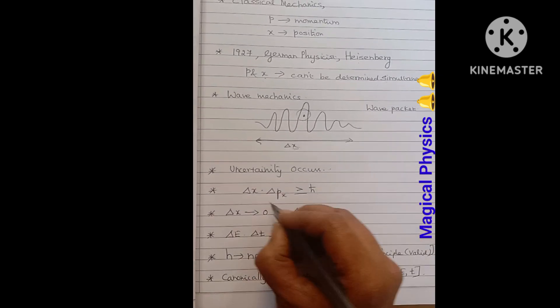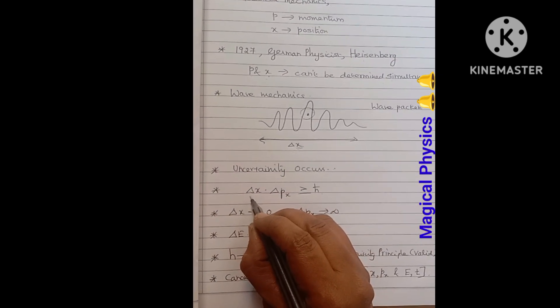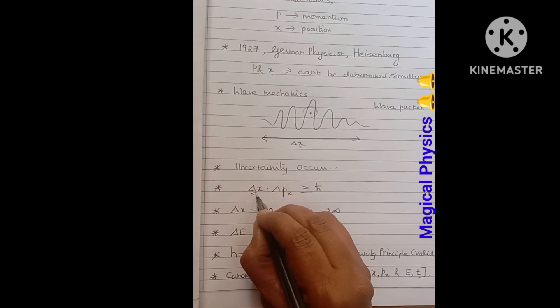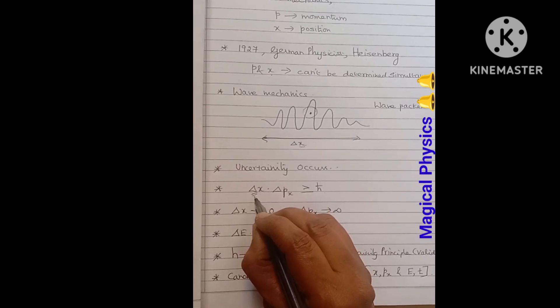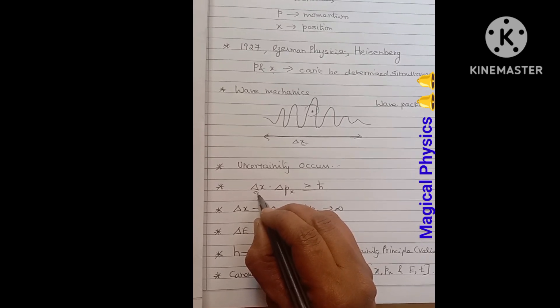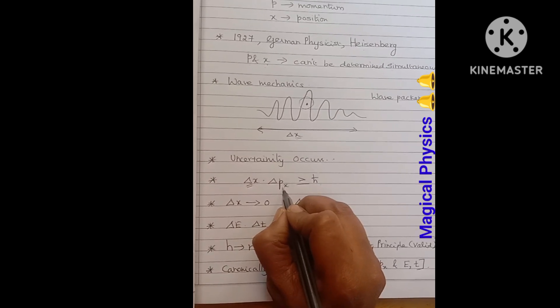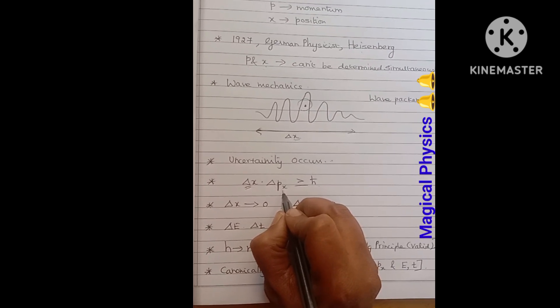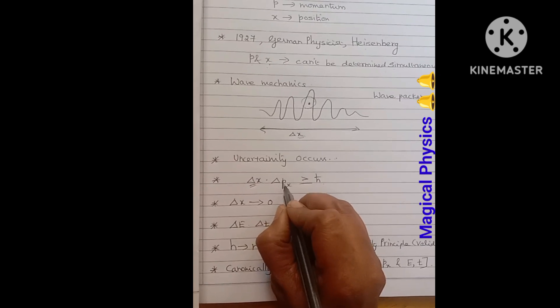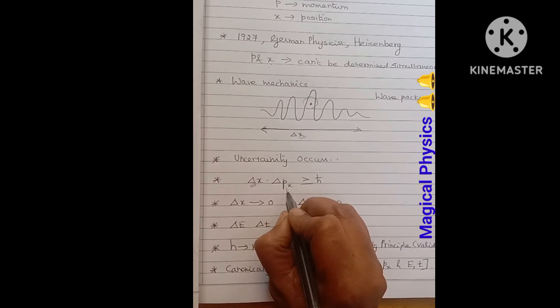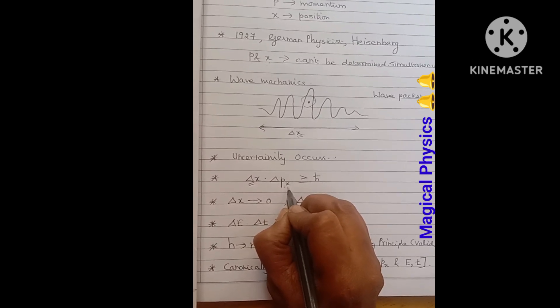As an expression, it can be written as Δx. This del represents the uncertainty term. The product between uncertainty in position and uncertainty in momentum, since it is in x direction, I have given suffix Δpx. This is uncertainty in momentum in the x direction.